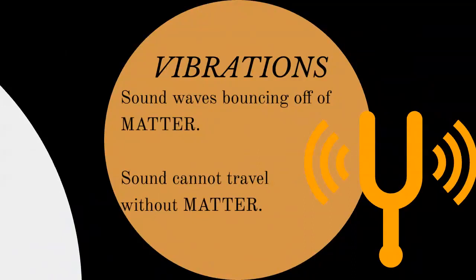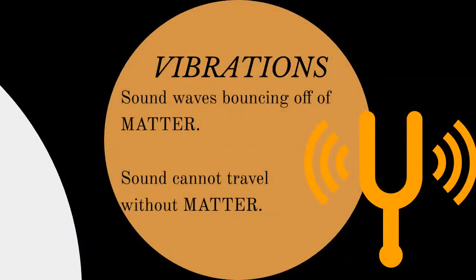Sound waves bounce off of matter. Sound cannot travel without matter — very, very important. All of those Star Wars movies where spaceships are magically making sound in outer space? Not possible. You need to have matter for things to make sound. When astronauts are in outer space, things bounce off the matter of their spaceship, and so they can hear that. But we as viewers watching the spaceship travel through space — completely scientifically inaccurate, even though I love Star Wars. In my dog's case, it's the vocal cords in her voice box vibrating against each other. In my guitar, it's the strings moving back and forth really, really fast.